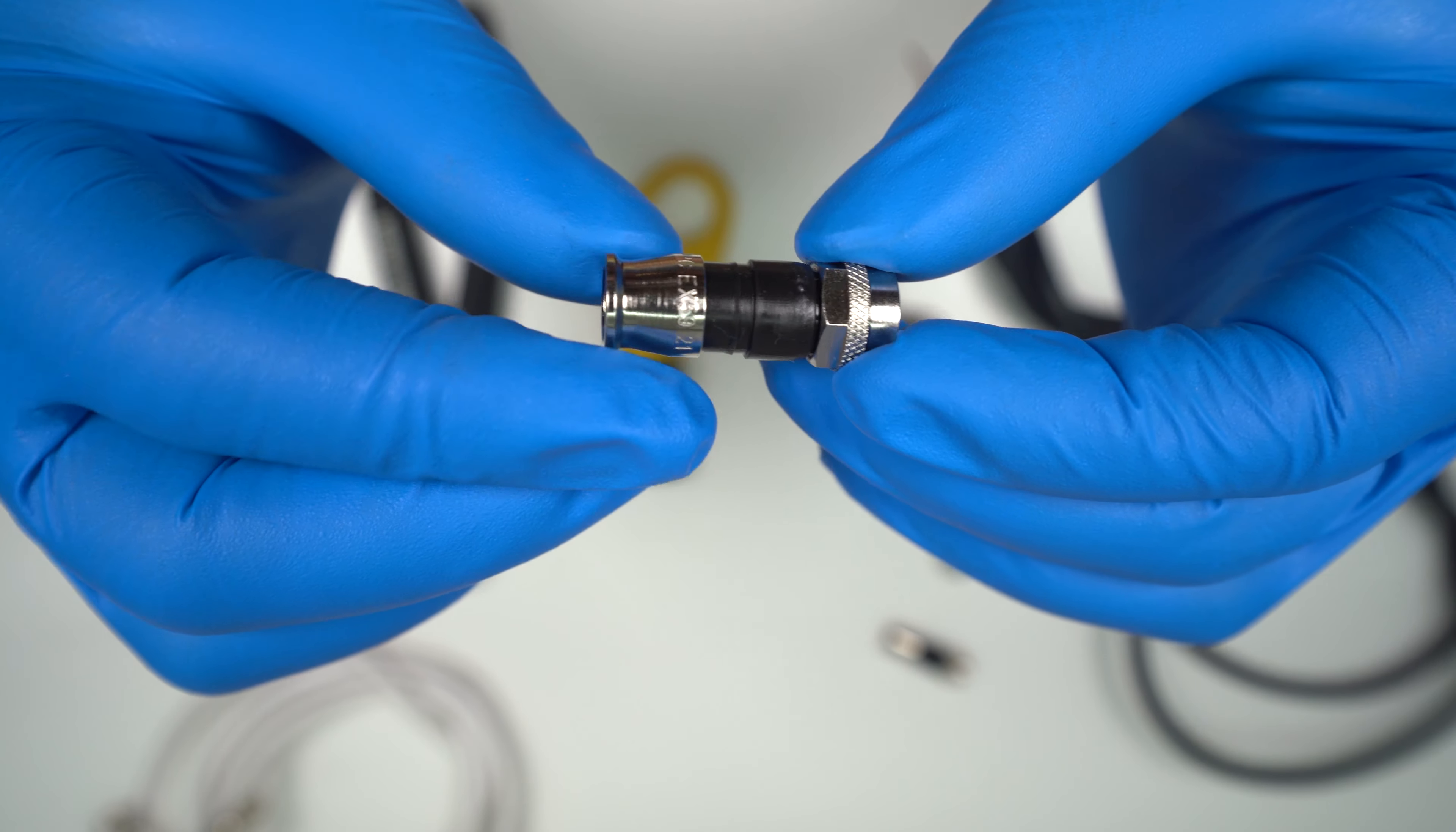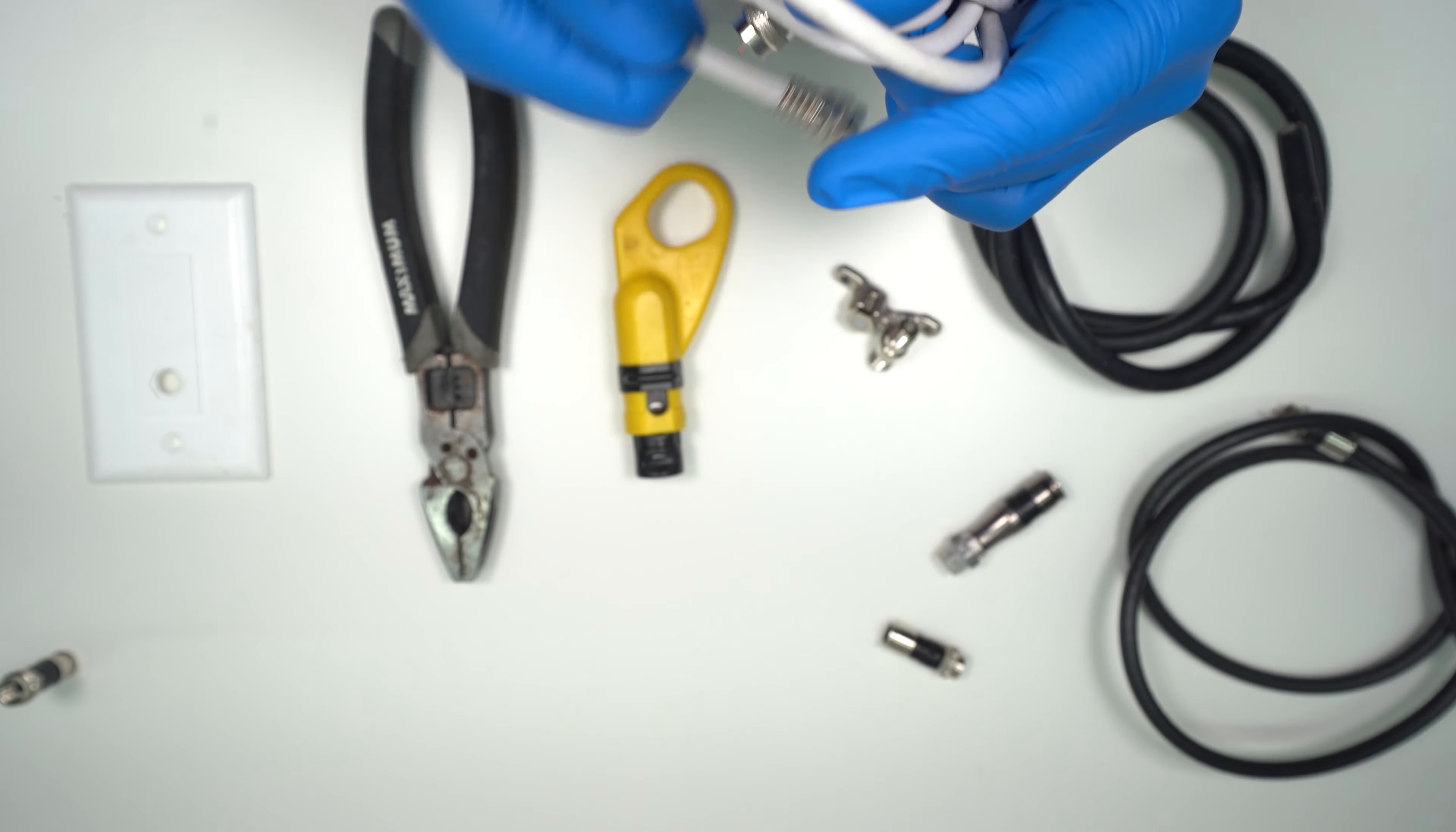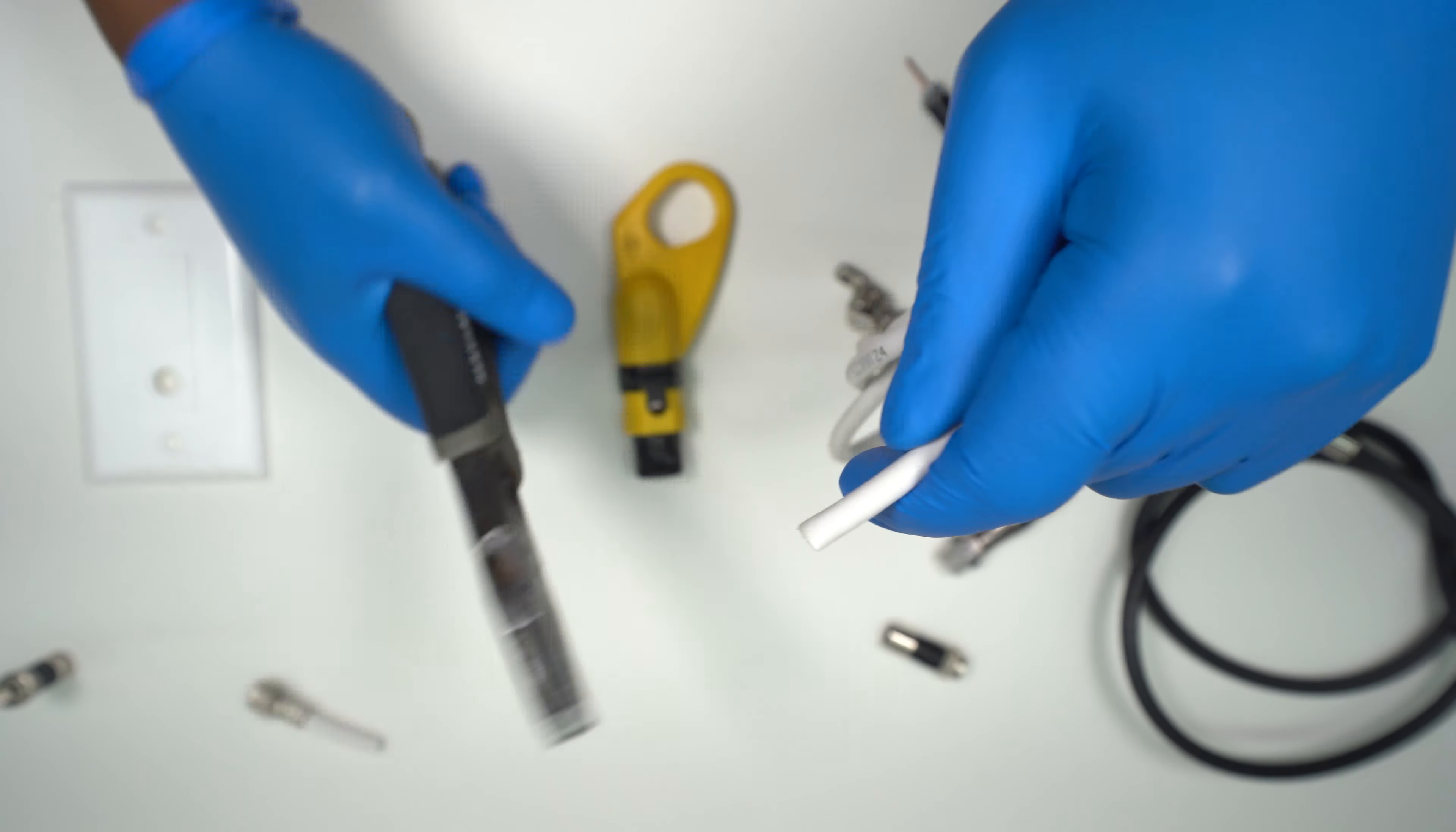So the old style connector is what you just saw, the ones where people could use any hand tool and just crunch it on. Nowadays we crimp them. The newer ones have a tapered end as you saw earlier. I'm just going to cut this one here and we'll get started making the cable.